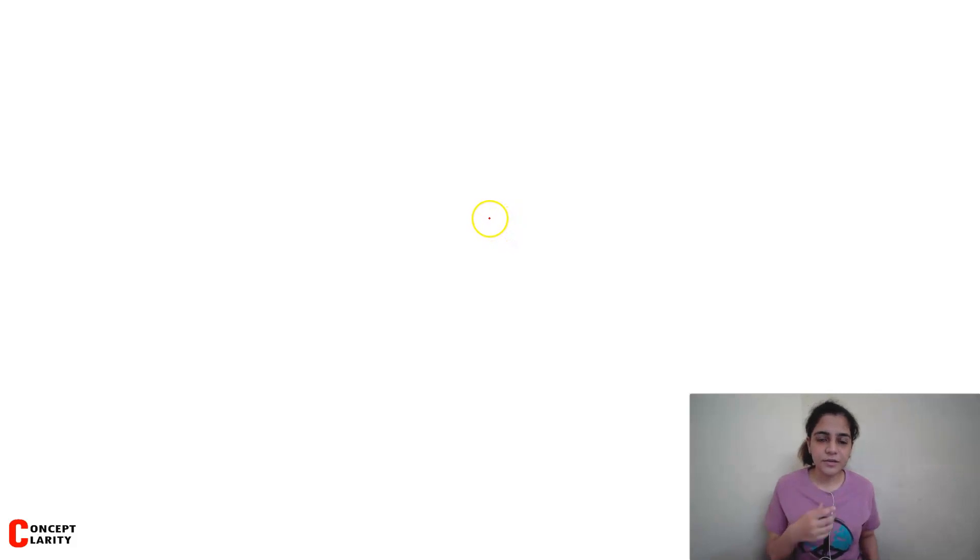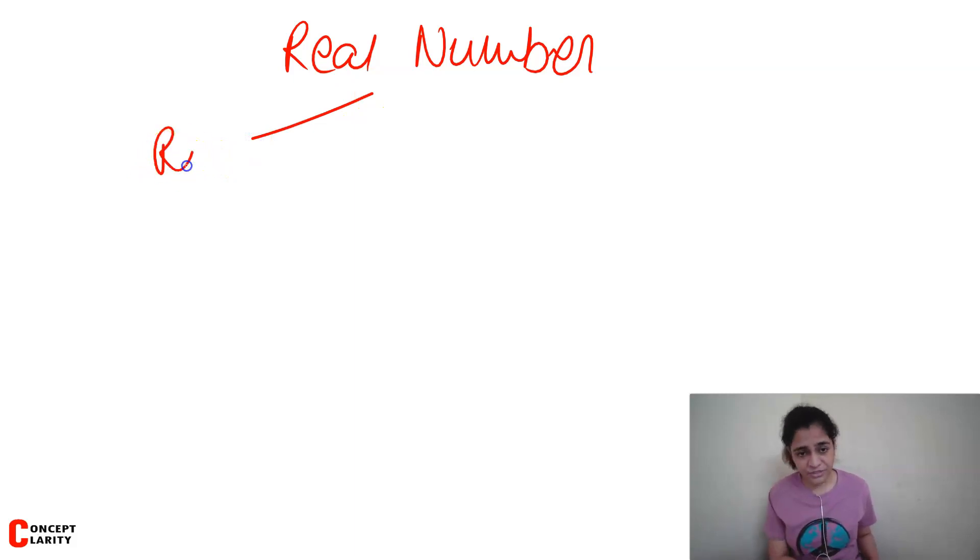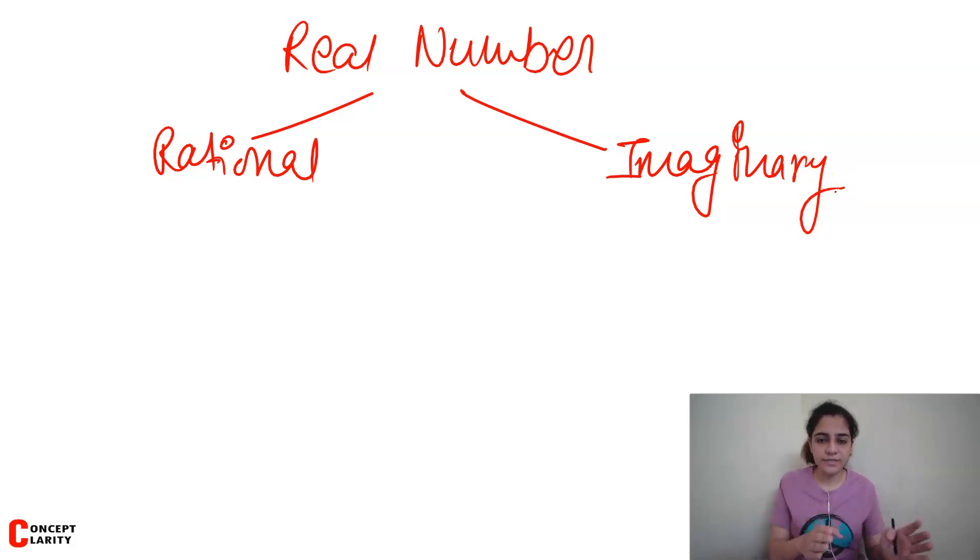We will talk about exactly what are rational numbers, what are irrational numbers, and after that we will talk about what we use. First I will tell you that our whole number system, which we call real numbers, we divide into two parts - one is rational number and the other is imaginary number. Imaginary number we call it i, and rational number we call it q.